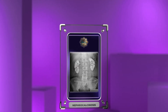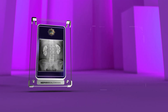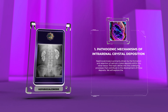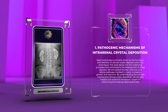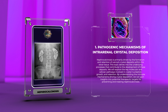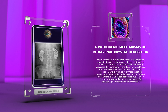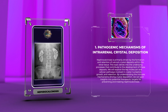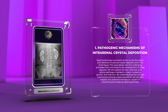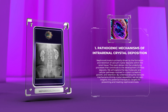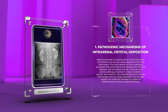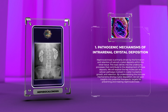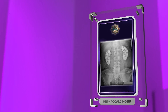Nephrocalcinosis is primarily driven by the formation and retention of calcium crystal deposits within the renal tissue. We will explore the key molecular and cellular pathways involved in crystal nucleation, growth, and retention. By understanding the intricate mechanisms driving crystal deposition, we can gain insights into potential therapeutic targets for preventing and treating nephrocalcinosis.